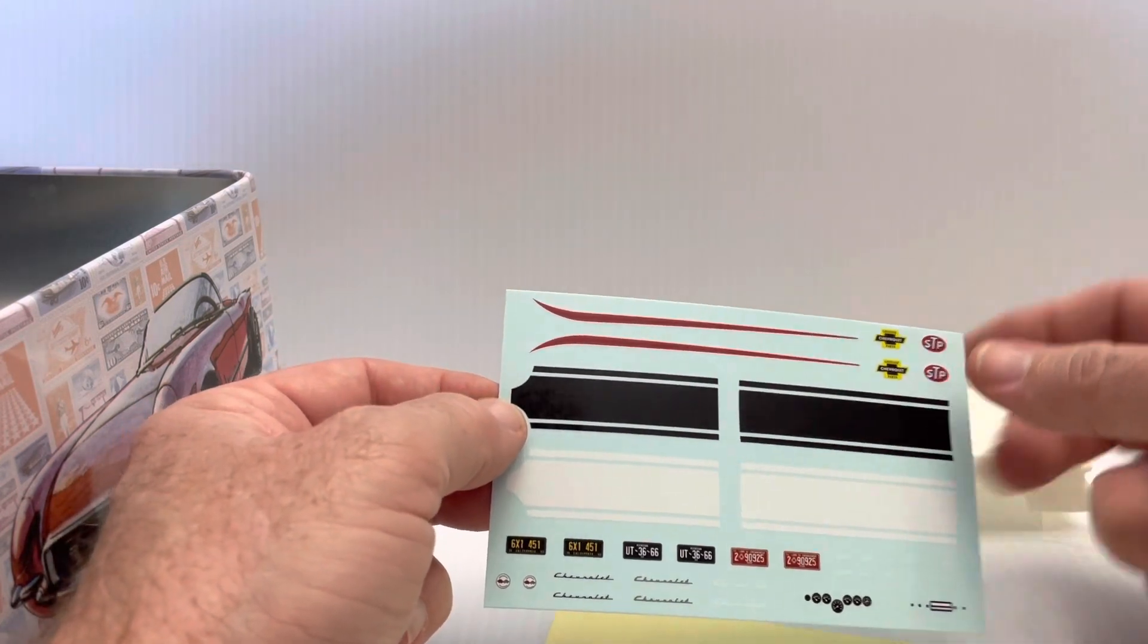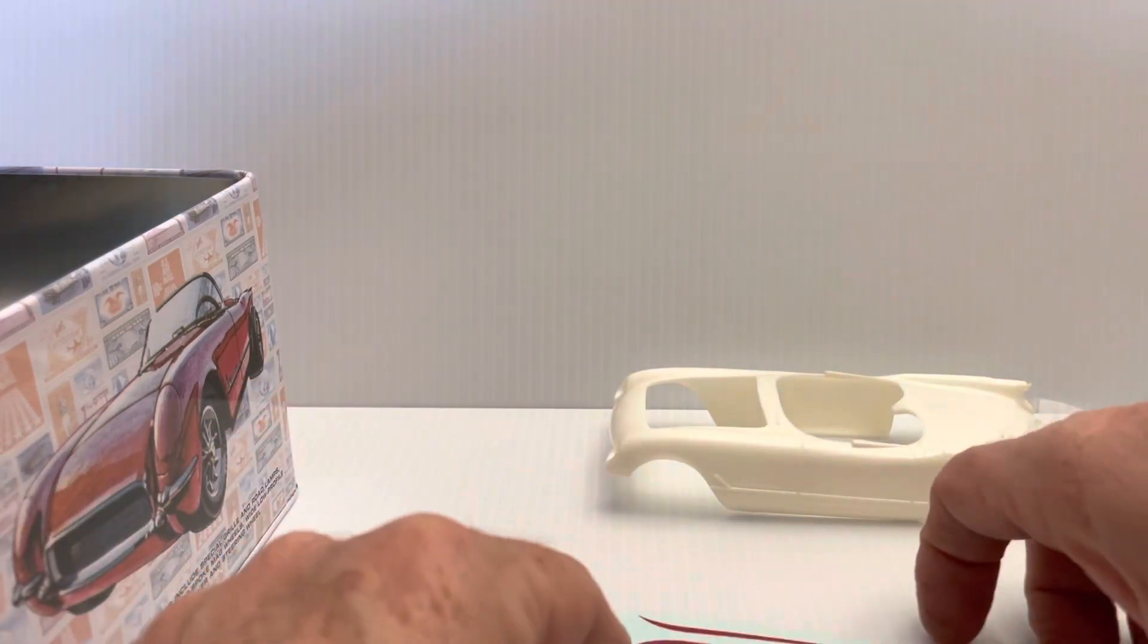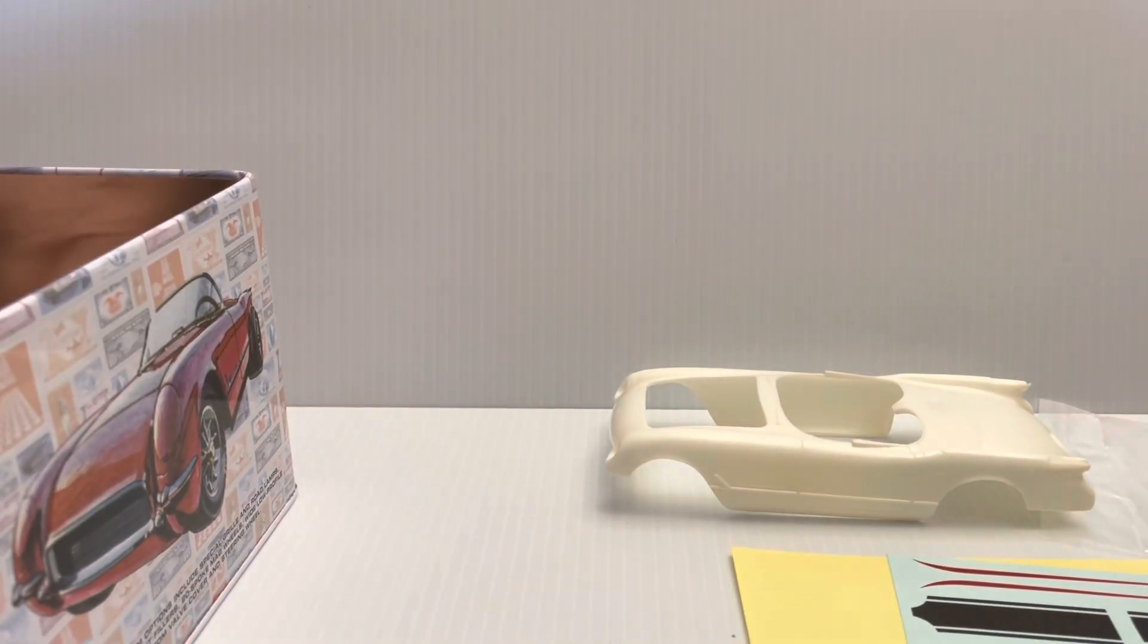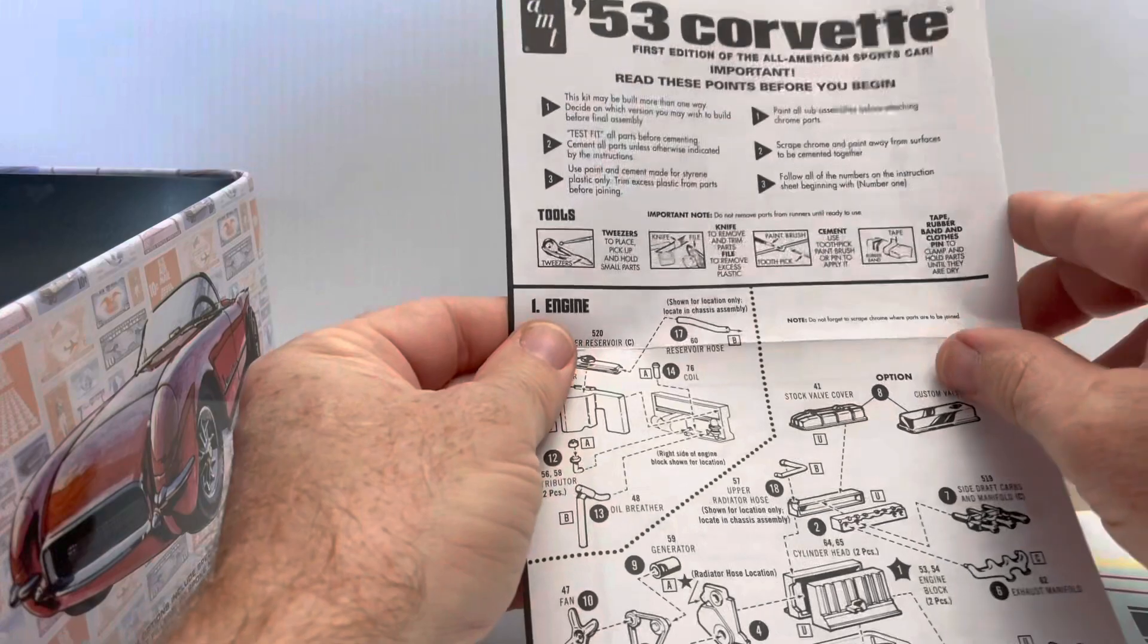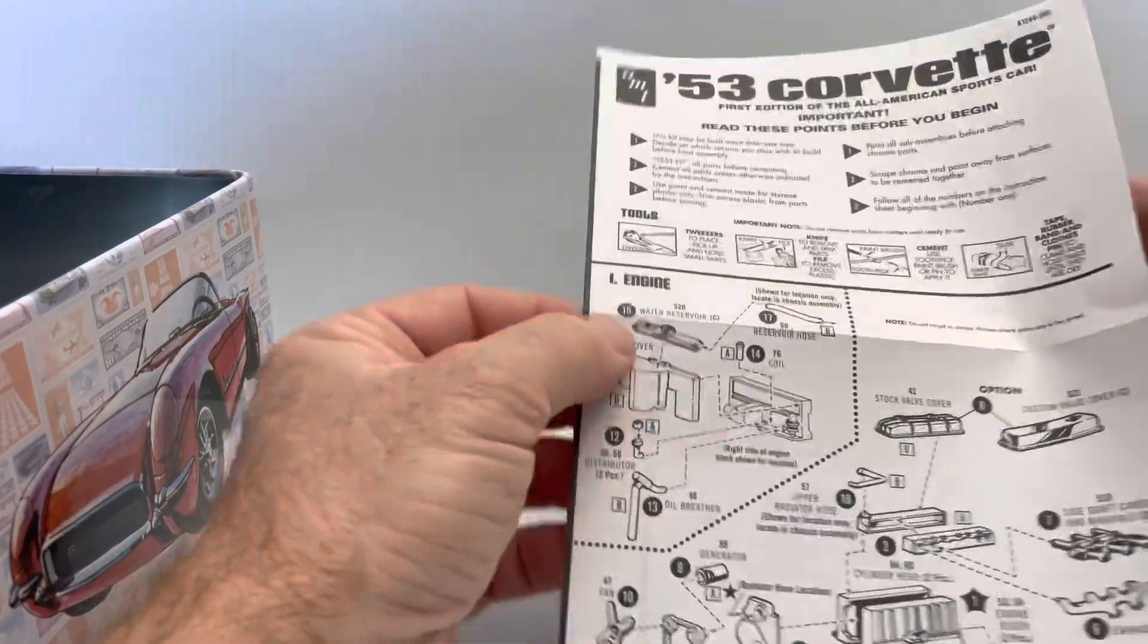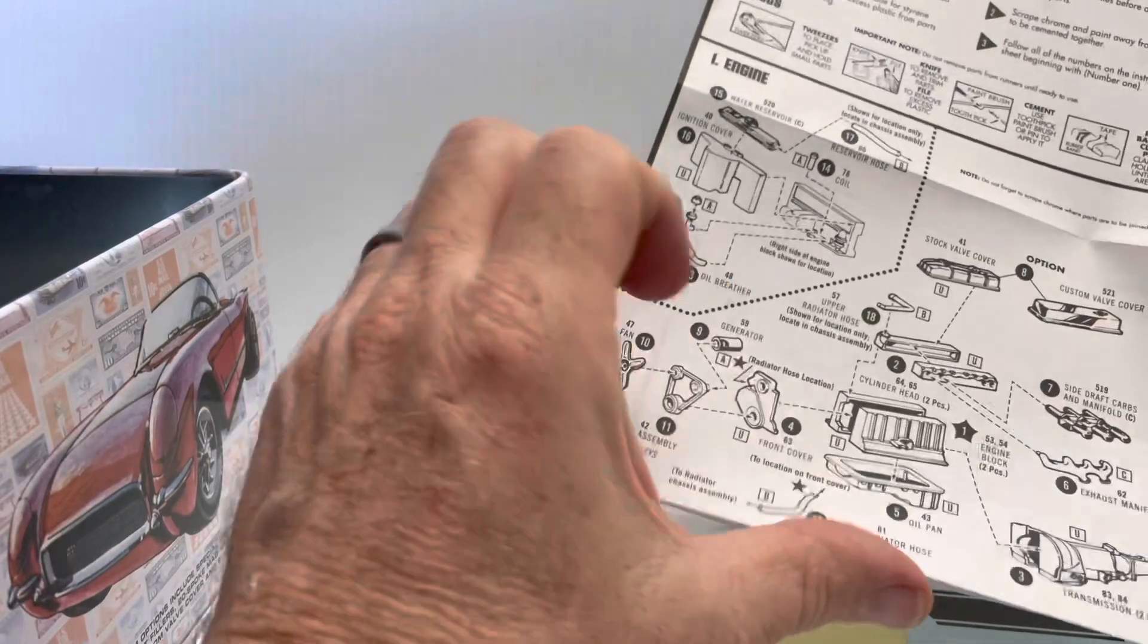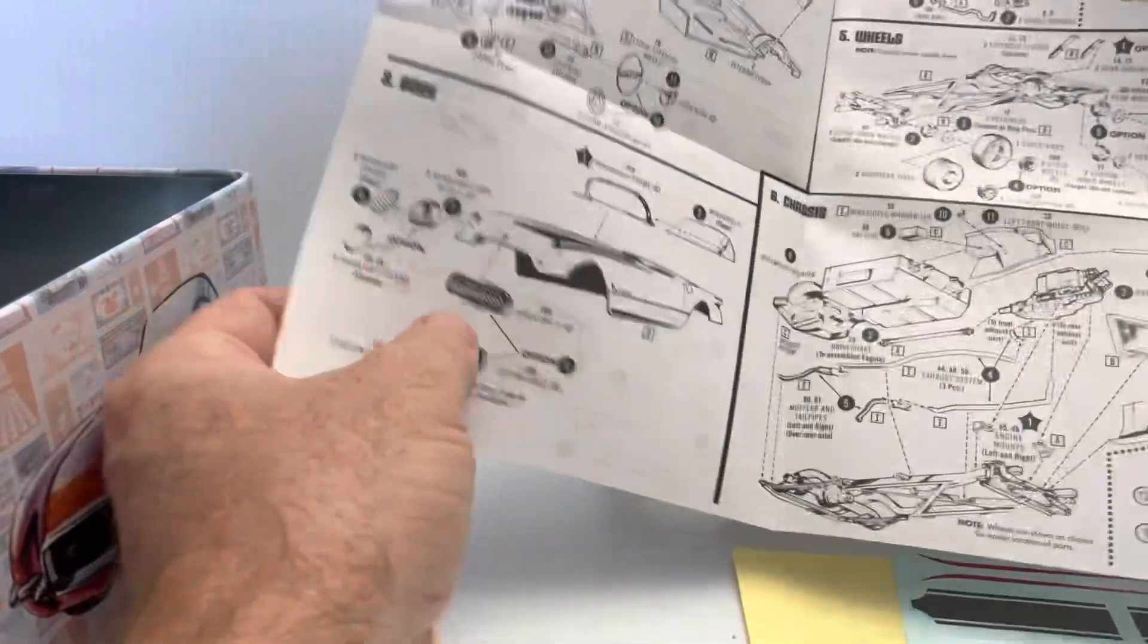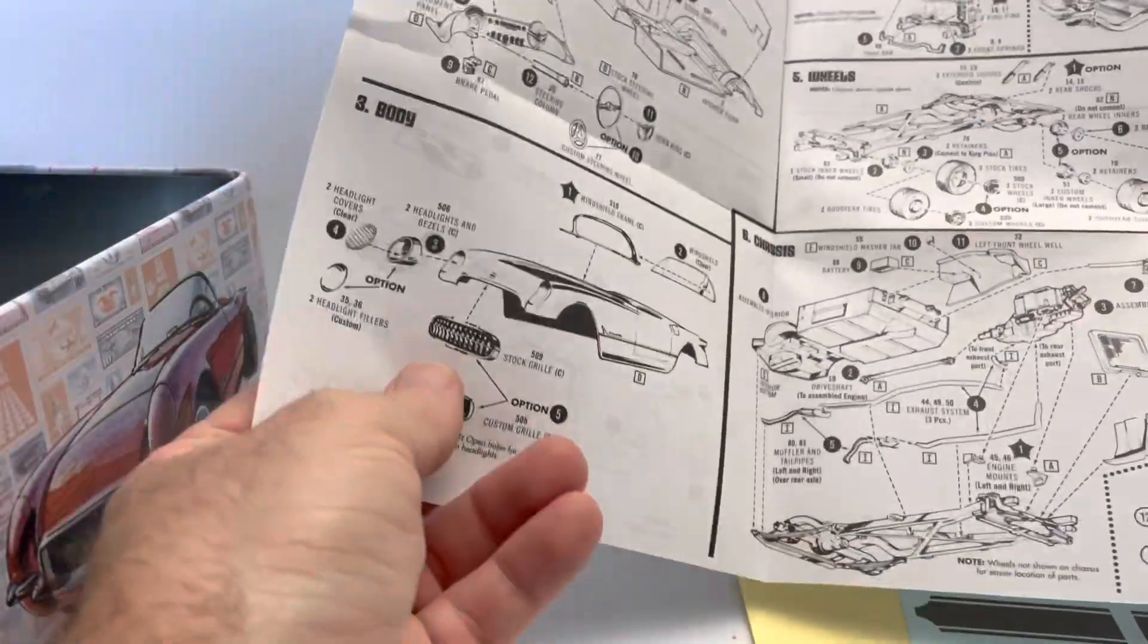That's pretty nice. They look good. Water slide decals and our standard AMT sheet with directions. Let's see, we got an inline six-cylinder blue flame engine.